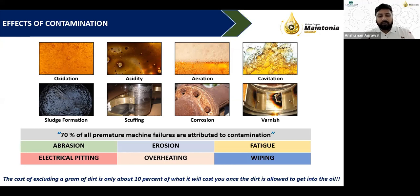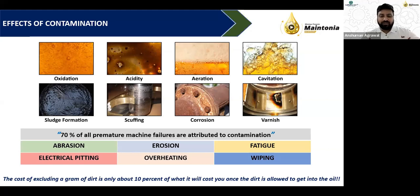It has been found that around 70 to 80% of premature machine failures can be traced to poor contamination control in lubrication systems.